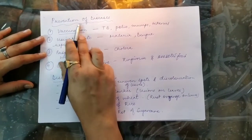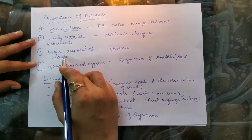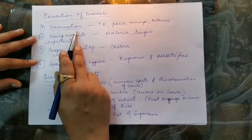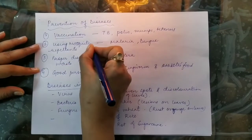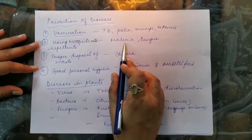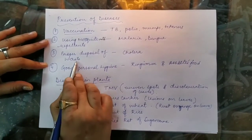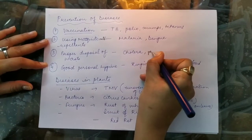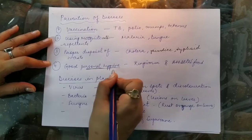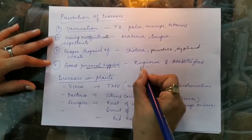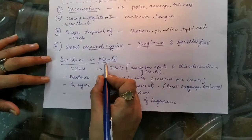Prevention is better than cure. Vaccination can be done for diseases like tuberculosis, polio, mumps, and tetanus. Using mosquito nets or mosquito repellents is effective against malaria, dengue, and chikungunya. Proper disposal of wastewater protects us from cholera, jaundice, and typhoid. Maintaining good personal hygiene — cleaning hands and feet properly — helps prevent fungal diseases like ringworm and athlete's foot.